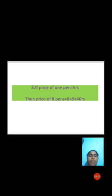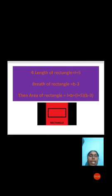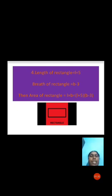Third example: if the price of 1 pen is 5 rupees, then the price of 8 pens is 8 × 5 = 40 rupees. Fourth example: the length of a rectangle is (L + 5) and the breadth is (B − 3). What is the area? By the formula, area = L × B, so here area = (L + 5)(B − 3).